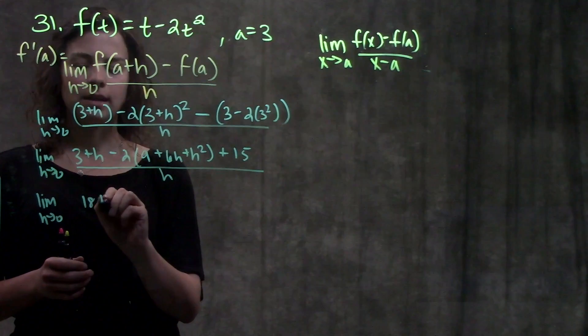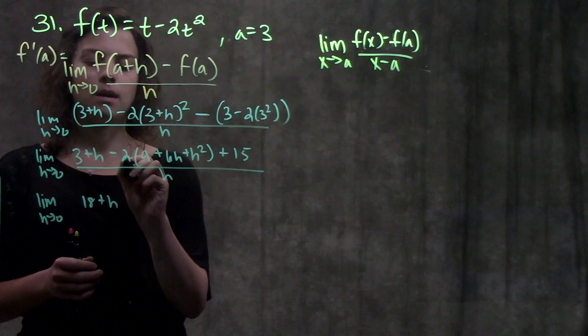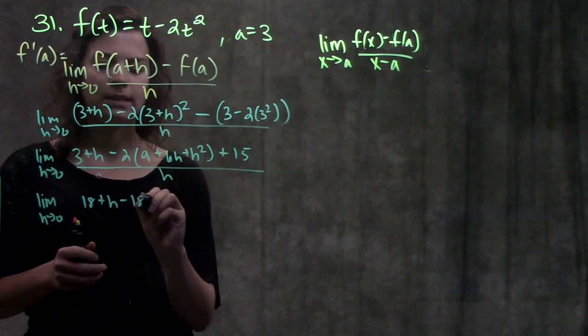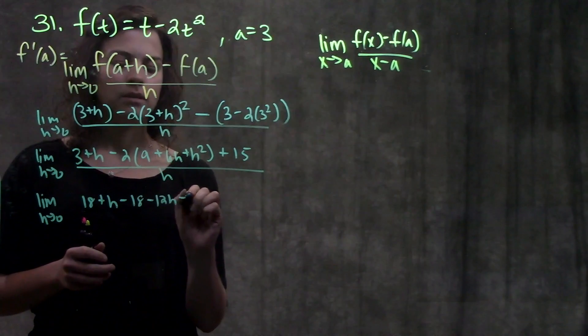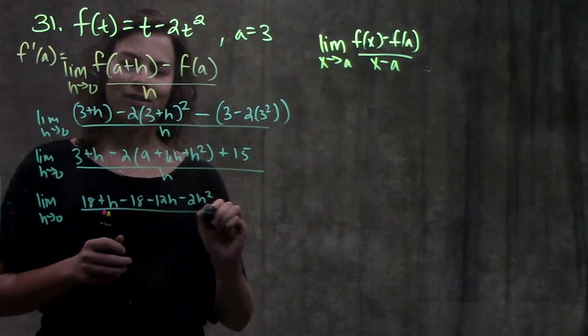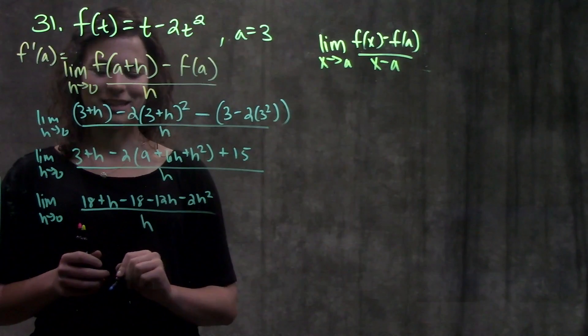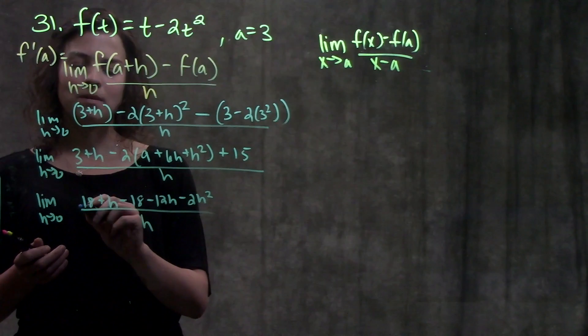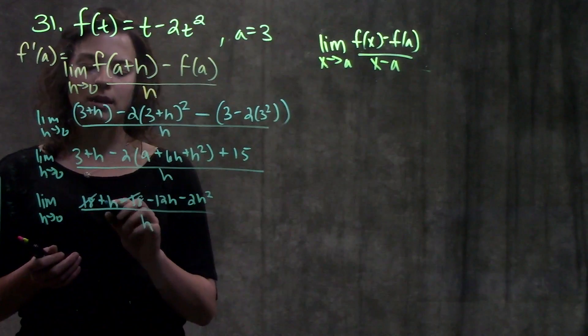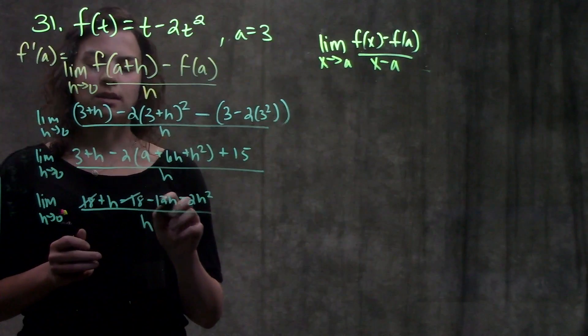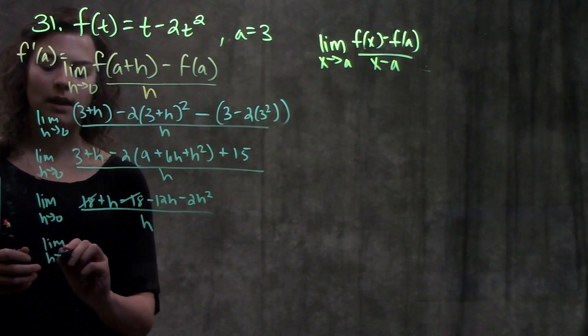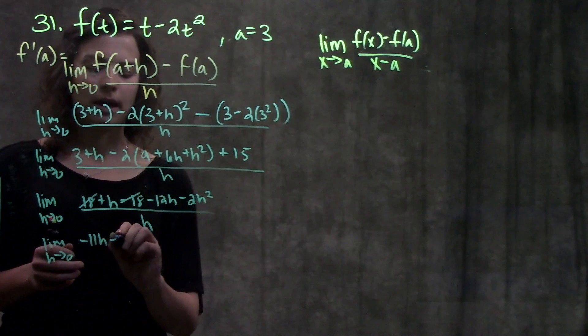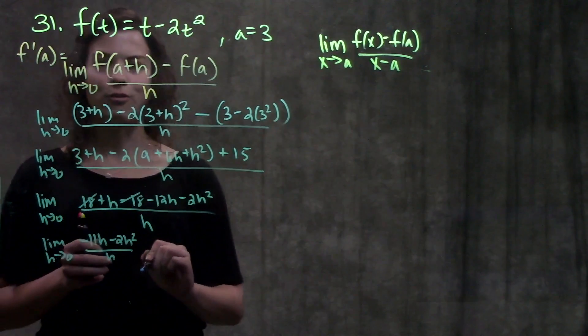18 plus h minus, I'm going to distribute this minus 2 into each term in this quantity. So that leaves me with minus 18, minus 12h, minus 2h squared, all of that over h. I'm going to combine my like terms again. The 18s are going to end up canceling. I'm going to add my h to the minus 12h, and that'll give me minus 11h. So now I have minus 11h minus 2h squared, all that over h.